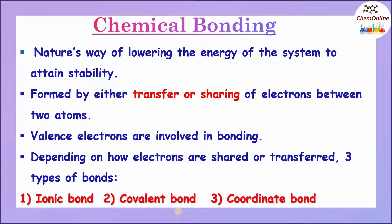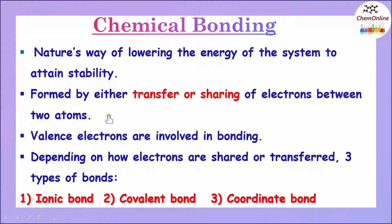The formation of a chemical bond is nature's way of lowering the energy of the system to attain stability. A chemical bond is formed either by transfer of electrons or sharing of electrons between two or more atoms. Usually, the valence electrons are involved in bonding.